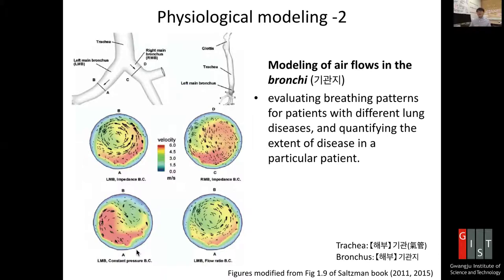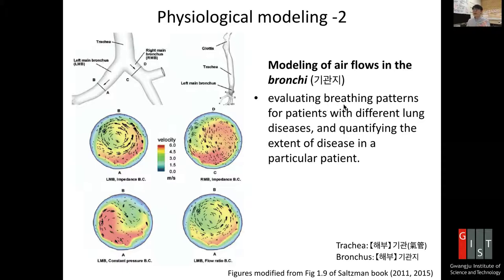As a second example, here is an airway diagram. You should familiarize yourself with the anatomy: the trachea, right main bronchus, and left main bronchus, with their asymmetric lobes. Modeling air flows in the bronchi can be important for patients — evaluating breathing patterns for patients with different lung diseases and quantifying the extent of disease in a particular patient.